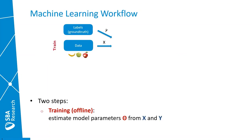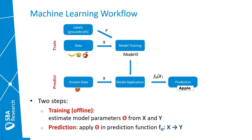Let's take a closer look at the typical machine learning workflow. We have broadly speaking two steps. The first step is a training step, which mostly happens offline, and here we want to estimate the model parameters from input data and the according labels, for example classes that are assigned to it. With this we obtain the trained model and the model parameters. In the second step, the prediction step, we want to apply this model on unseen data to get a prediction of what is the most likely outcome for that input sample.